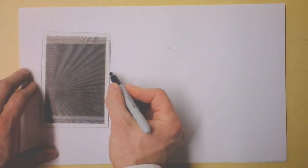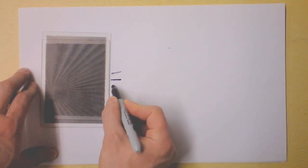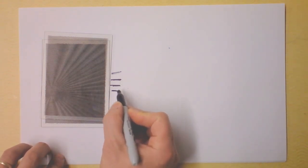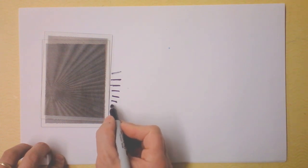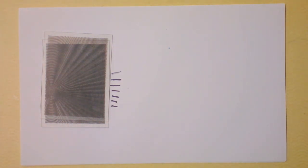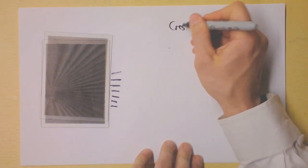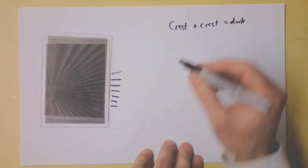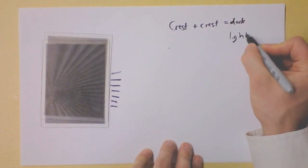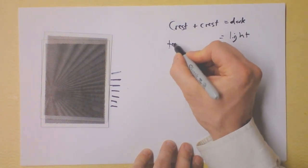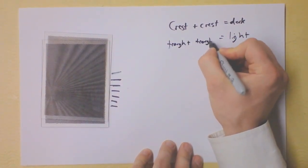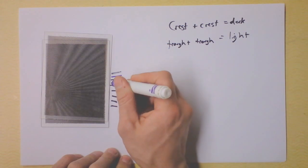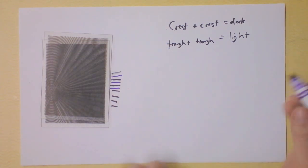I can see dark lines here, here, and here - and now they're in completely different locations. Here, here, here, and here - they are approximately equally spaced. The dark lines mean that we have a crest plus a crest. What about the light lines? The light lines represent a trough and a trough, so in between each dark line I've got a trough and a trough.